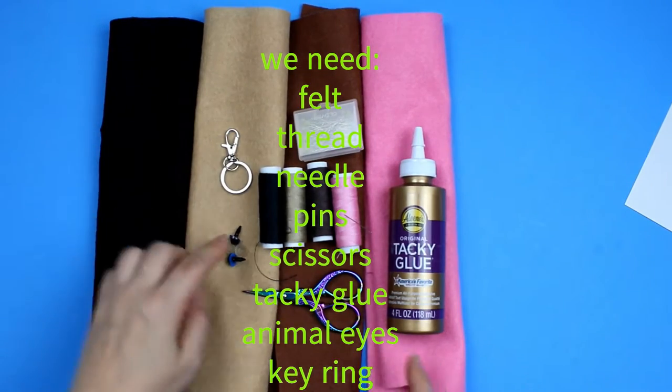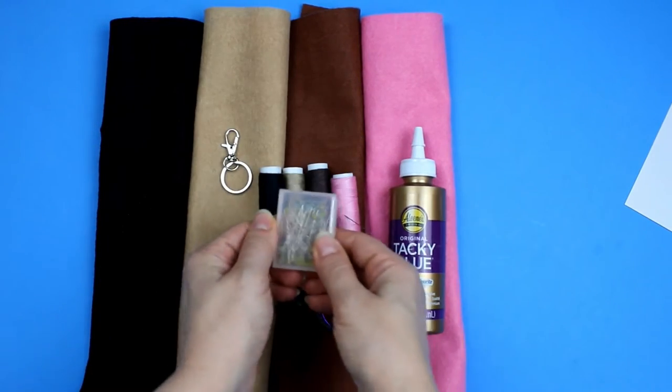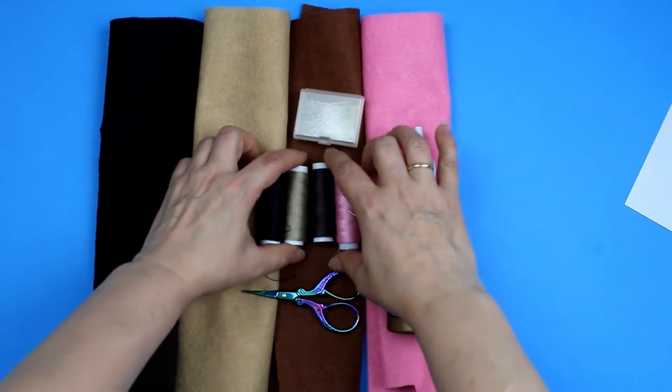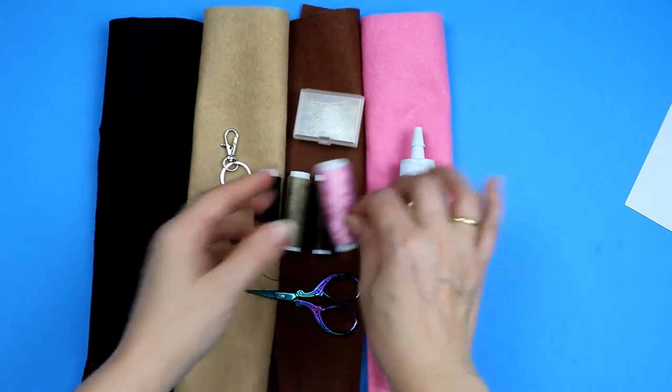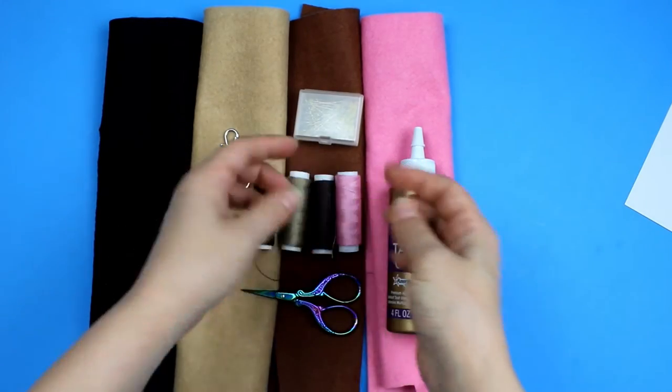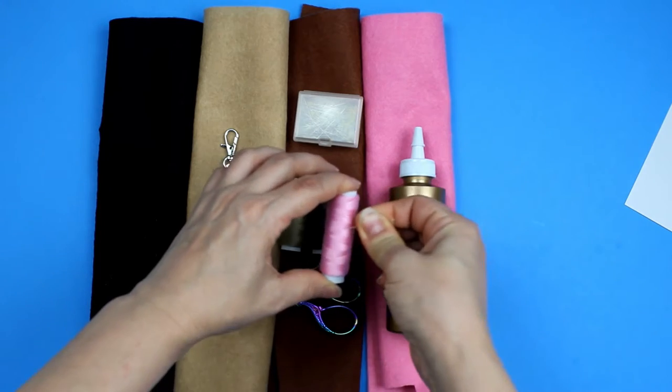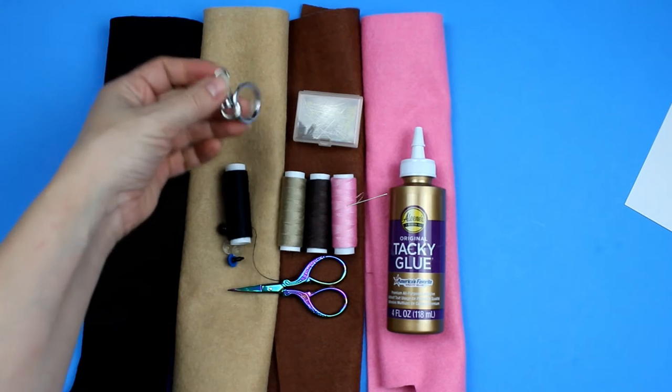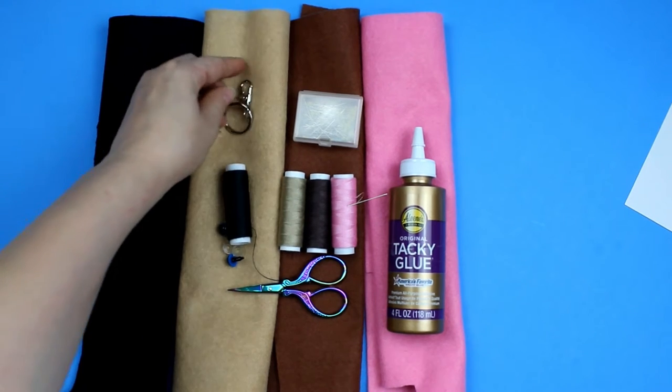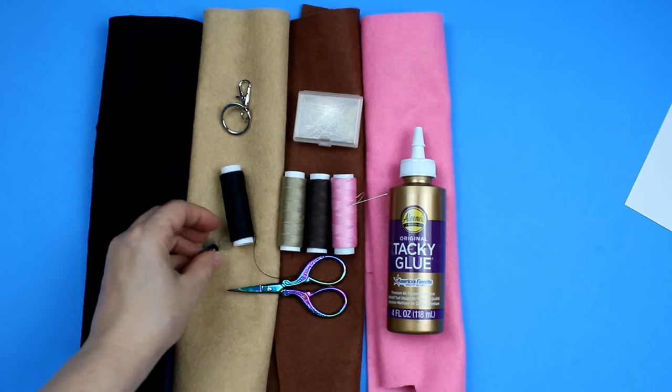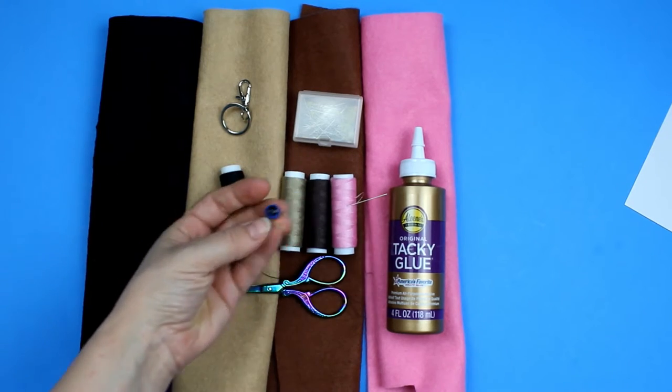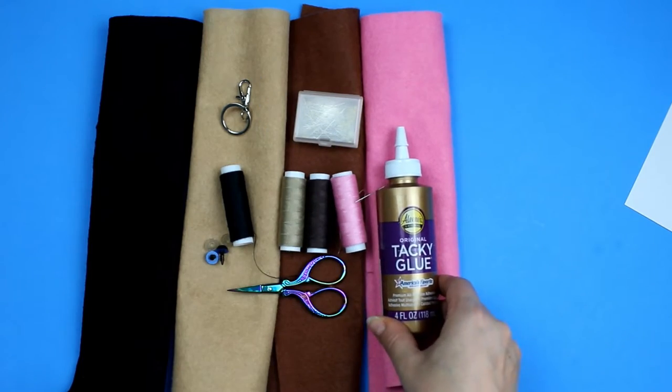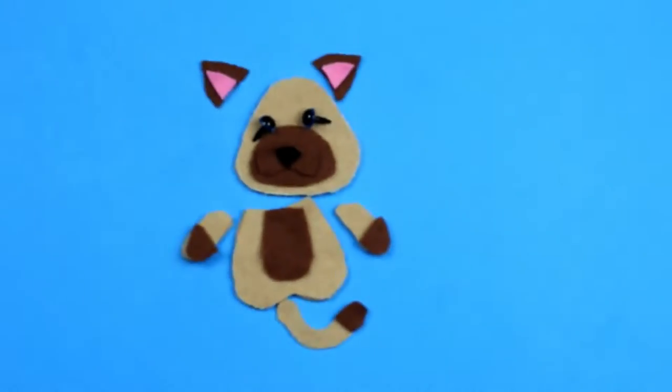We need pink, brown, tan, and black felt, pins, thread with the same colors, needle, scissors to cut the pattern pieces, a keyring, animal eyes, and tacky glue.